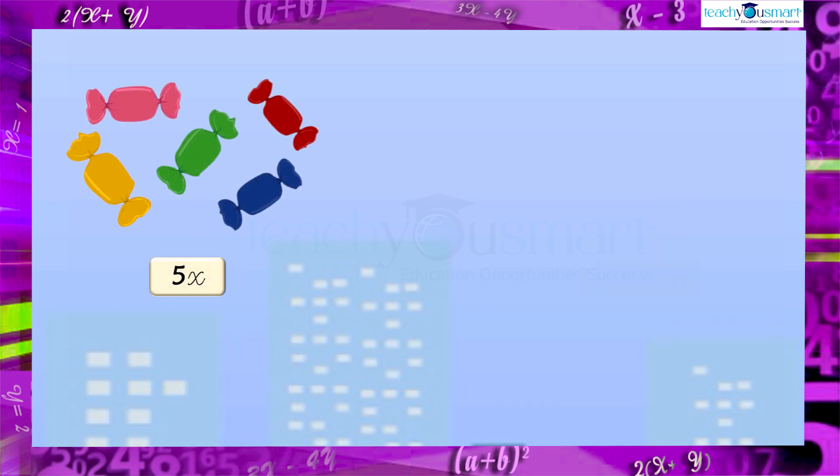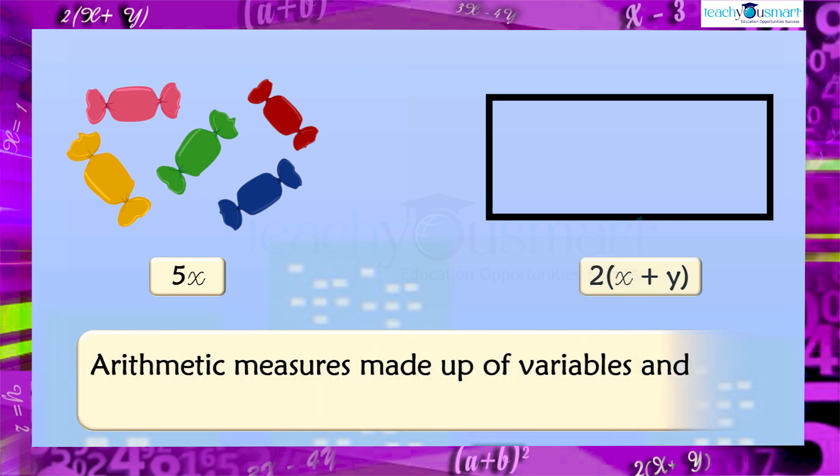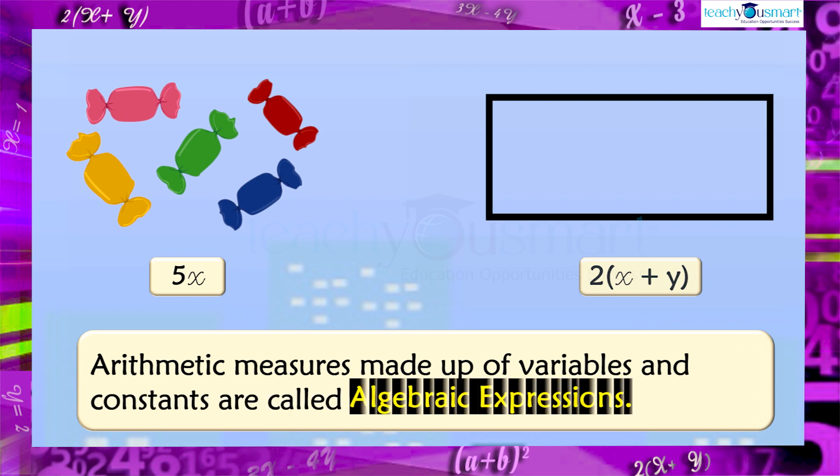Now, we have five x and two multiplied by x plus y. All such arithmetic measures made up of variables and constants are called algebraic expressions.